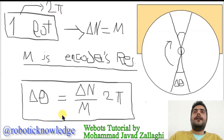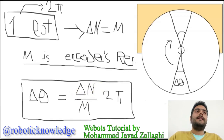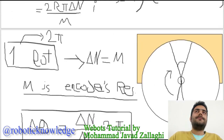Now I have the knowledge of both the change in the wheel's angle and the change of the encoder's feedback for a tiny time step.